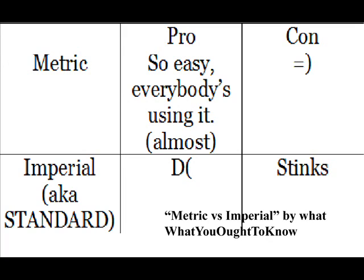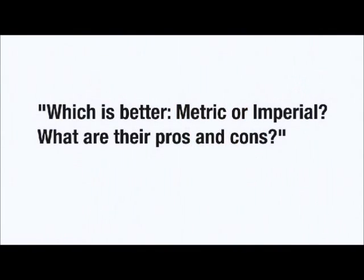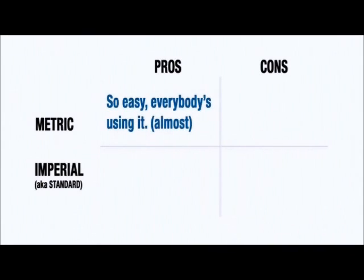In "What You Ought to Know"'s metric versus imperial presentation, we are given a table asking which is better — metric or imperial — and what are their pros and cons. The presenter says this is easy because there's only one for each: metric's pro is that it makes sense and virtually everyone uses it, while imperial's con is that it doesn't make any sense at all. As proof, he asks: what's 1 kilometer minus 20 decameters plus 3 meters minus 25 centimeters? The answer is 802.75 meters.